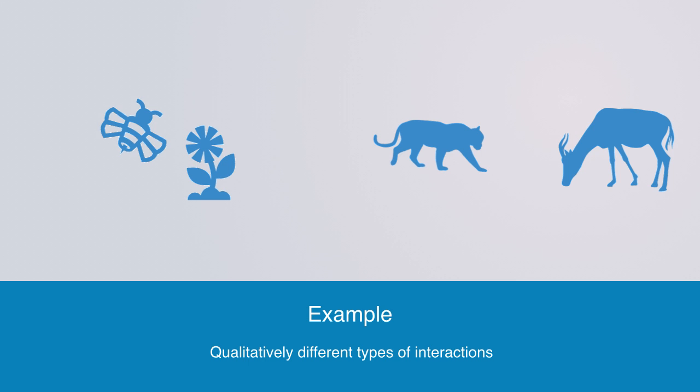Bees and flowers create synergistic interactions, or lions and deer interacting through relations of predator and prey. Both of these represent either super or sub-linear interactions.